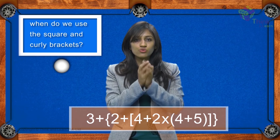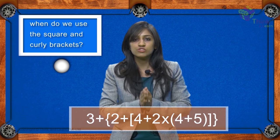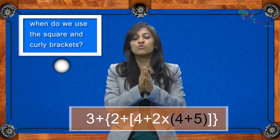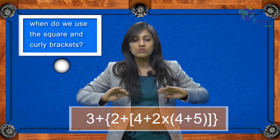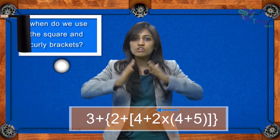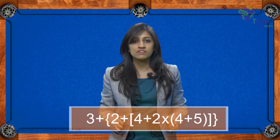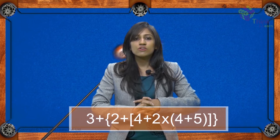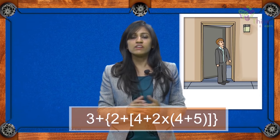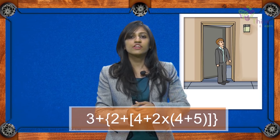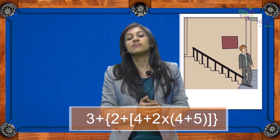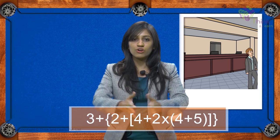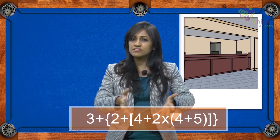You need to do the innermost grouping first, which would be in this case 4 plus 5. Do the operation there, then move outward from there — inner to outward, inner to outward like this. It's kind of like you're in a huge hotel and first you go out from the room, then you go down the stairs from the fifth floor, then you go out of the lobby, and finally you go out of the hotel. Pretty simple.